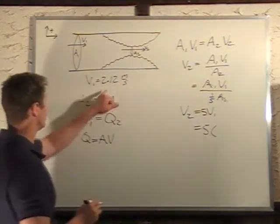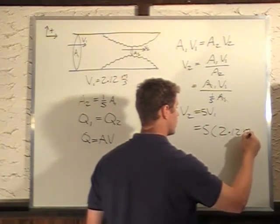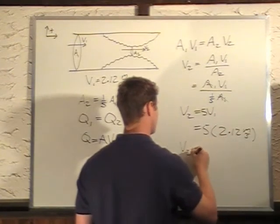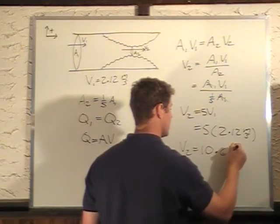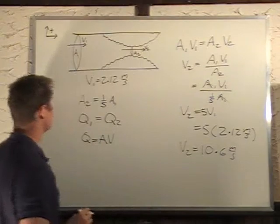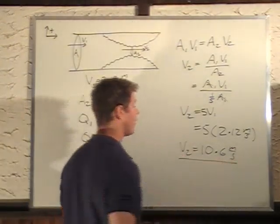V1 is 2.12 meters per second, so V2 is equal to 10.6 meters per second. And we have three significant digits here, three significant digits here. Final answer.